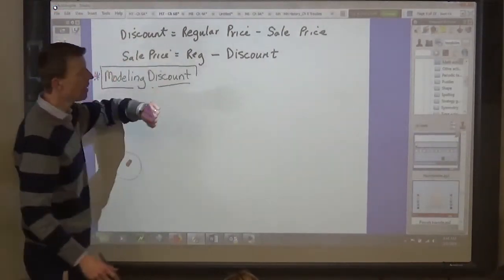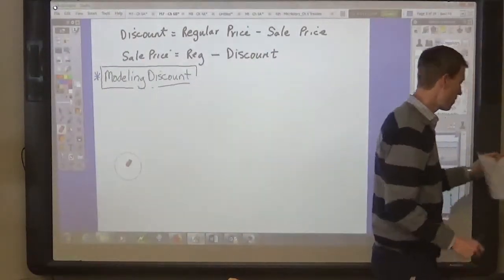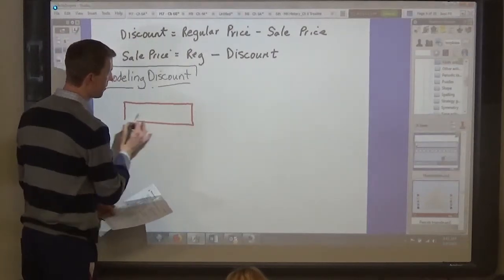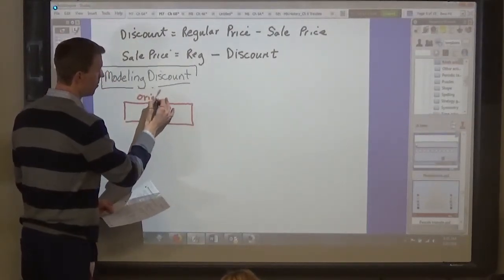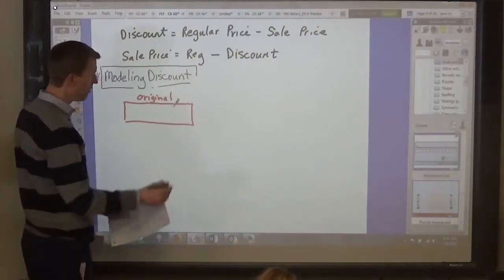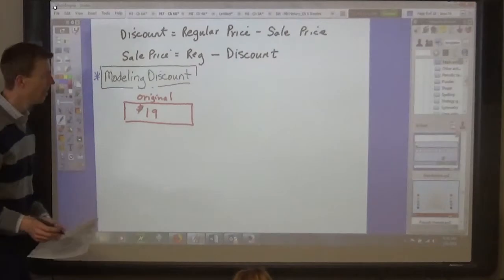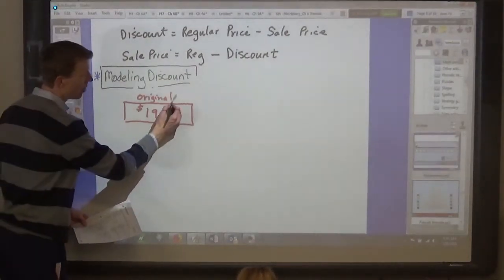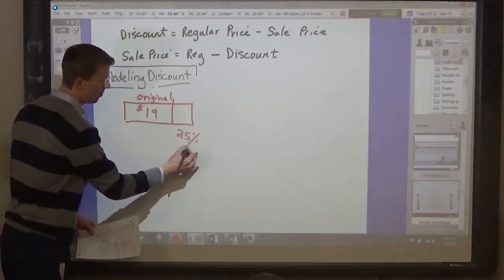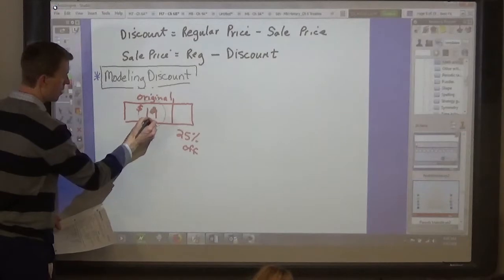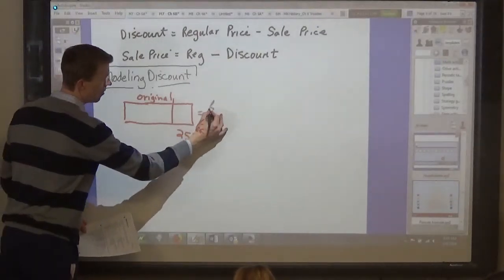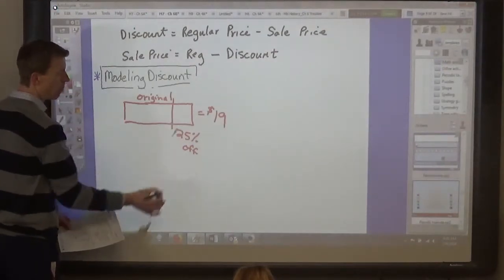So for modeling discount or modeling the sale price, you have an amount that is the original price, so we would draw a model for the original price, draw a box, and then take an amount off. So for example, if the original price is $19 and it's on sale for 25% off, now you're going to take off 25%. Wait, let's not put the 19 in the middle of it. Let's put the whole thing as $19, then take 25% off, right? What's the remaining percent then?